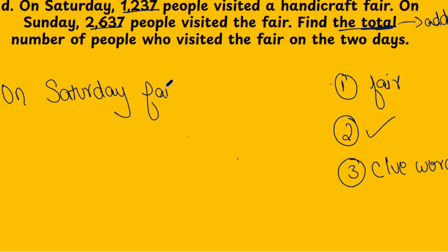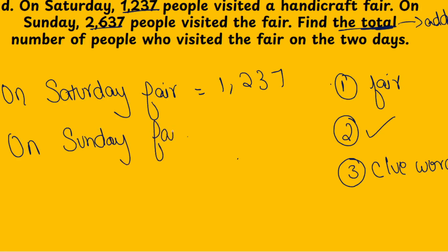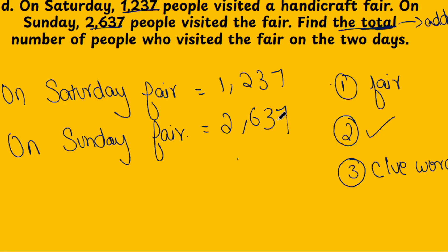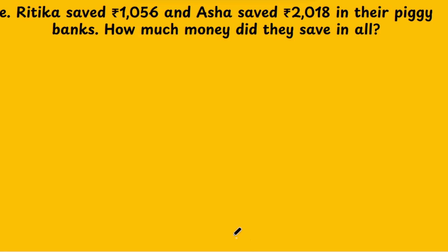On Saturday, people who visited the fair: 1237. On Sunday: 2637. You need to do the addition for these two numbers and find the answer.